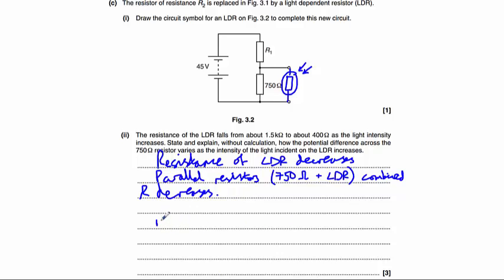that is the 750 ohm and the LDR combined resistance decreases. This is a potential divider circuit, so the resistance of each part of the potential divider is proportional to the potential difference. Therefore, the PD of the 750 ohm resistor decreases because the resistance of that combination has also decreased.